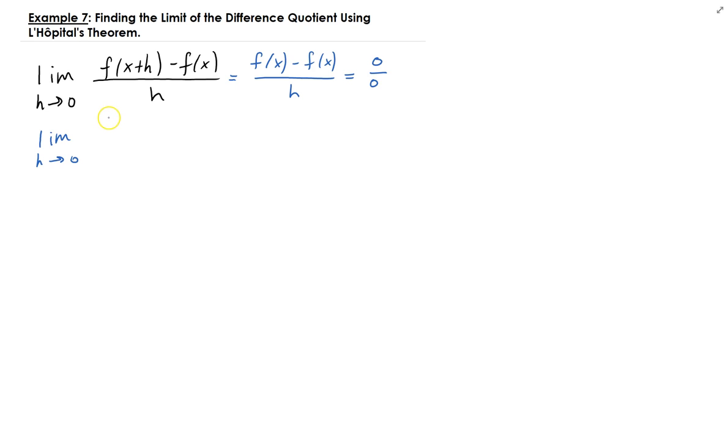So this is going to give us f prime of x plus h times the derivative with respect to h of x plus h minus the derivative of f. So f is in terms of x, but we're taking the derivative with respect to h, so that means f of x is treated as a constant, so this is going to be 0.